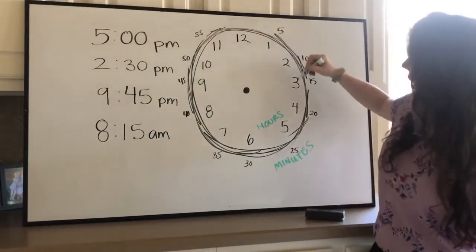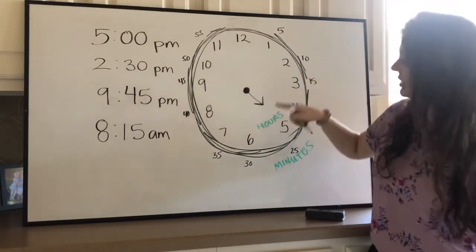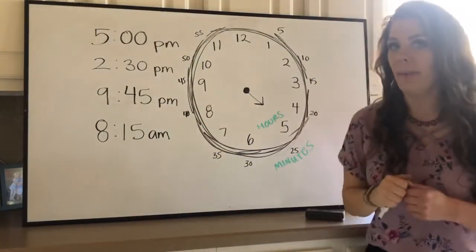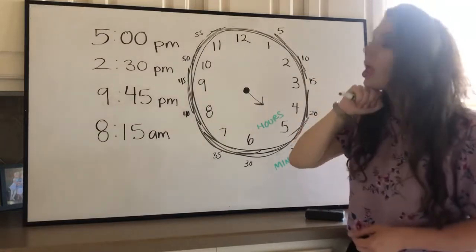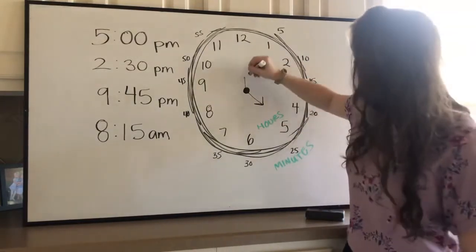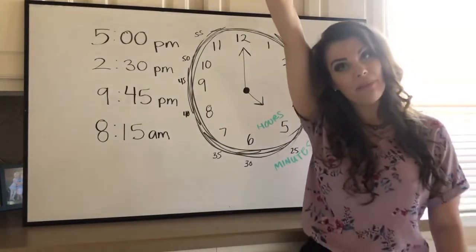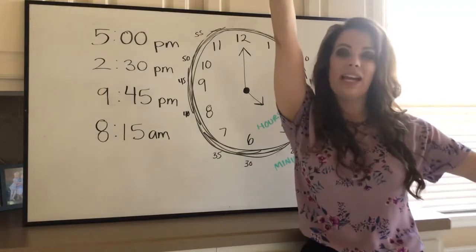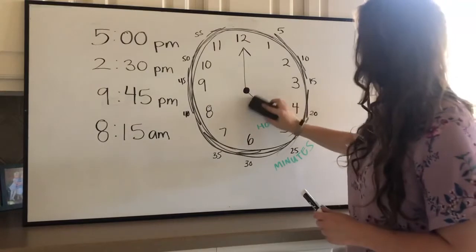Here it is. So I'm gonna draw my small hand pointing to the five. And my double zero, so where does that go? Where would my minutes point? Straight up. They point to my 12. So my long hand, my minute hand would be up at the 12, and my hour hand would be down at the five. Did you guys get that?